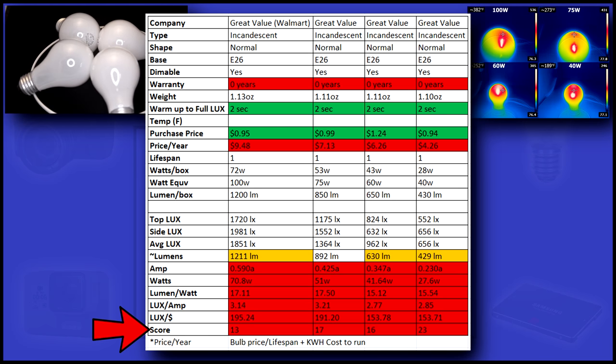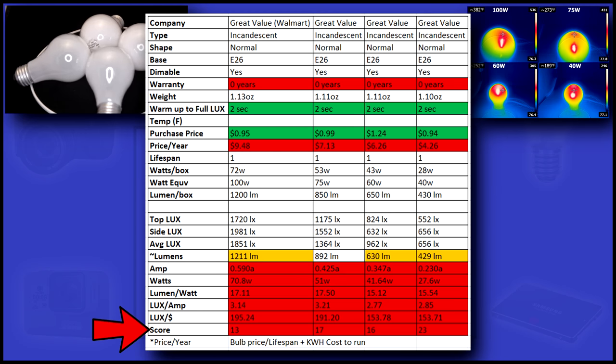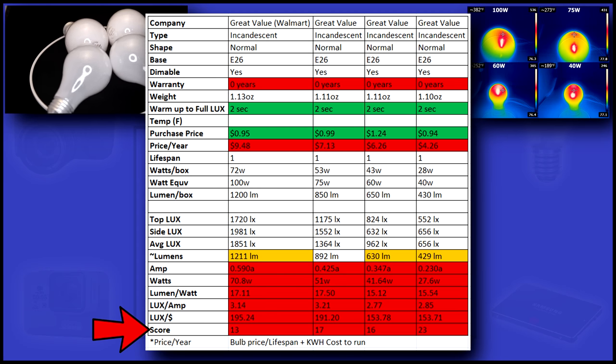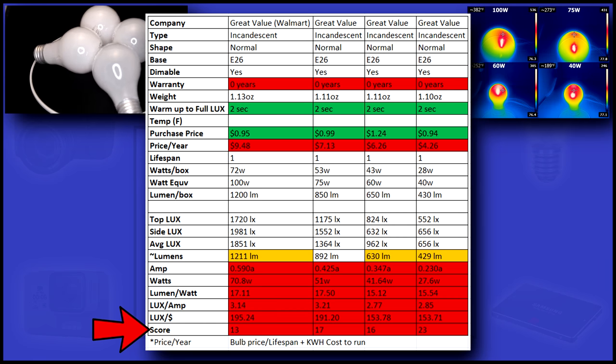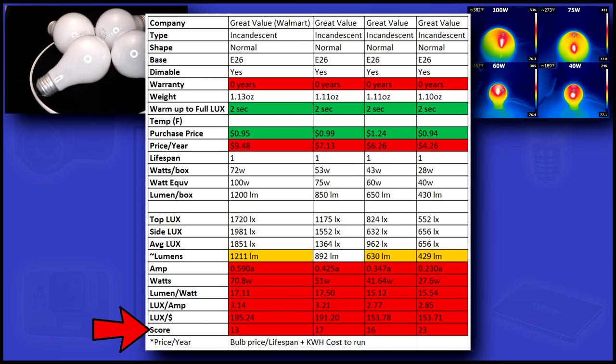In the end, I give each bulb a score. This score is calculated by using all the variables above, including price per year, lumen per watt, warranty, lifespan, and more.